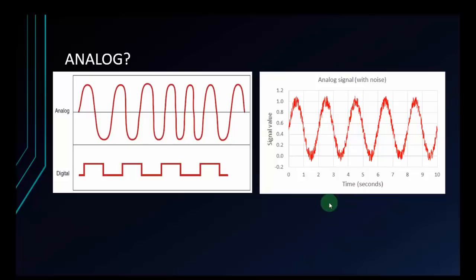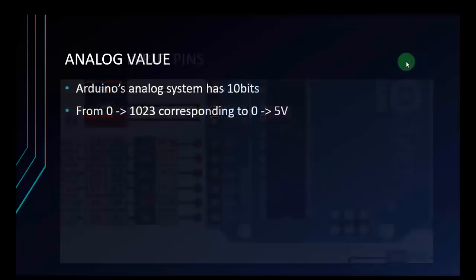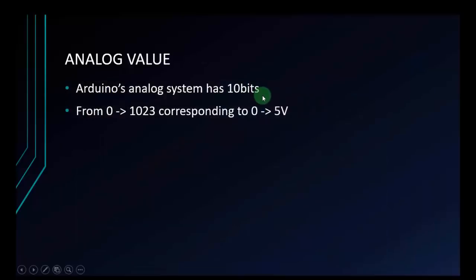We already know what an analog signal is. Now we will learn how to collect it from peripheral devices using Arduino. On Arduino UNO, we have 6 pins to receive the analog signal — from pin A0 to A5 on the left side of the UNO. The Arduino UNO's analog system has 10 bits, meaning it can convert the analog signal to a digital value from 0 to 1023, corresponding to 0 to 5 volts.